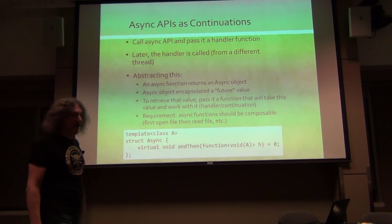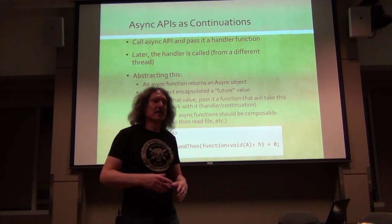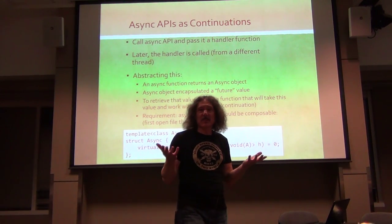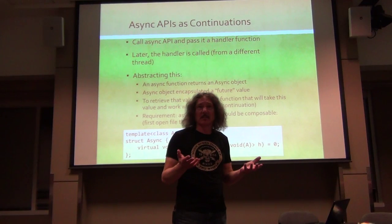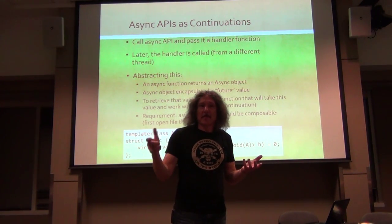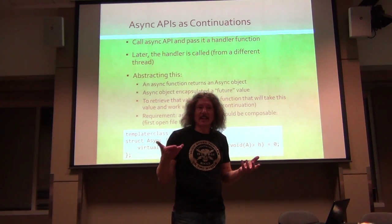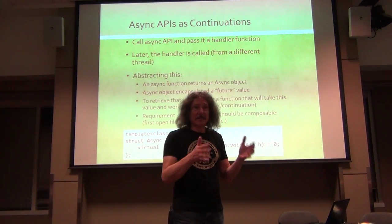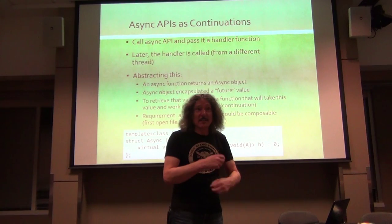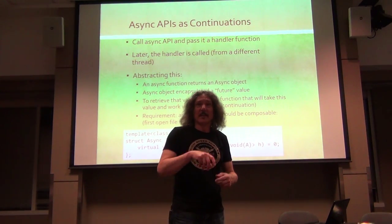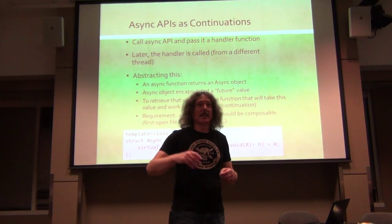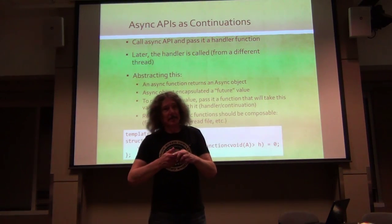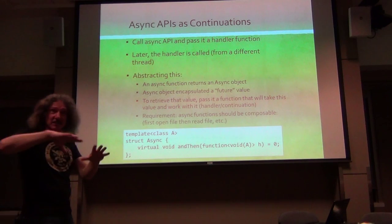The way to look at async API in abstract terms is to think about continuations. An async API is a function that takes a handler. This handler is called a continuation because it continues the work. After this function manages to calculate the value, it will call your continuation. So the rest of the program is in this continuation - this is continuation-based programming.